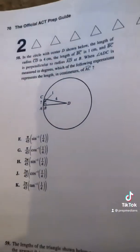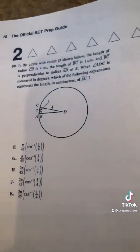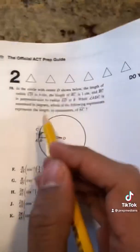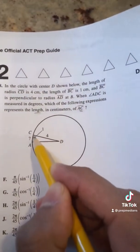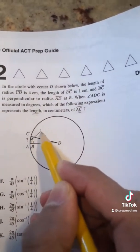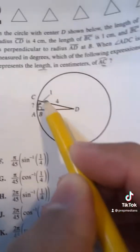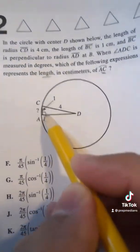And so you come across this question, and this question looks really scary at first, but you take a deep breath, and you underline the goal. The goal is to find the length of AC, and AC is right here, and it's right next to this line that is marked 1. And it's way smaller than that 4, so it's just about 1.